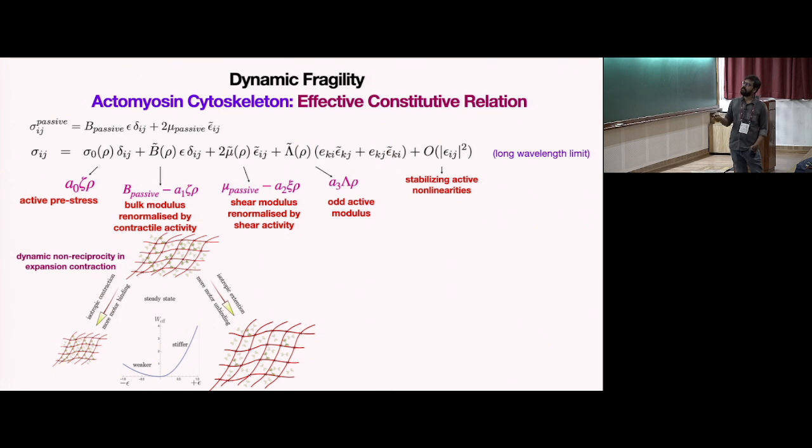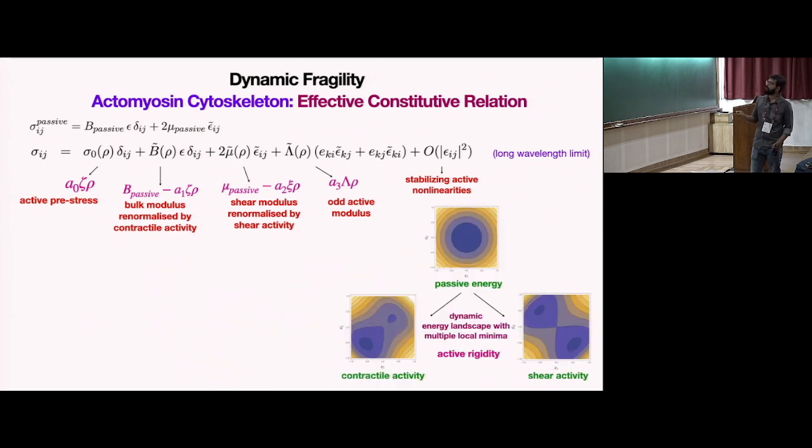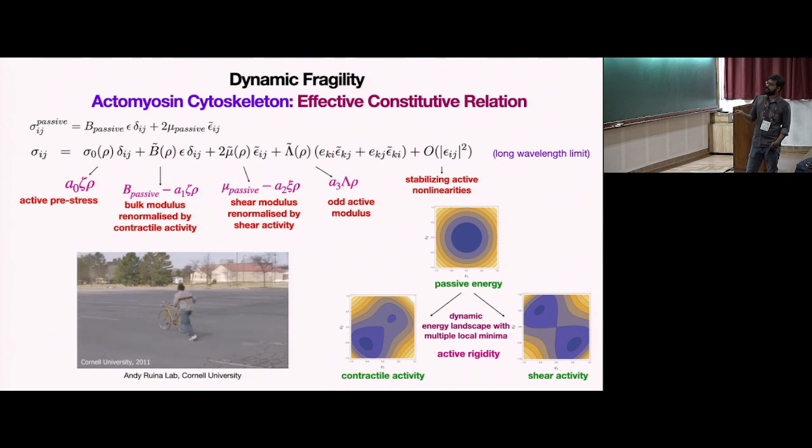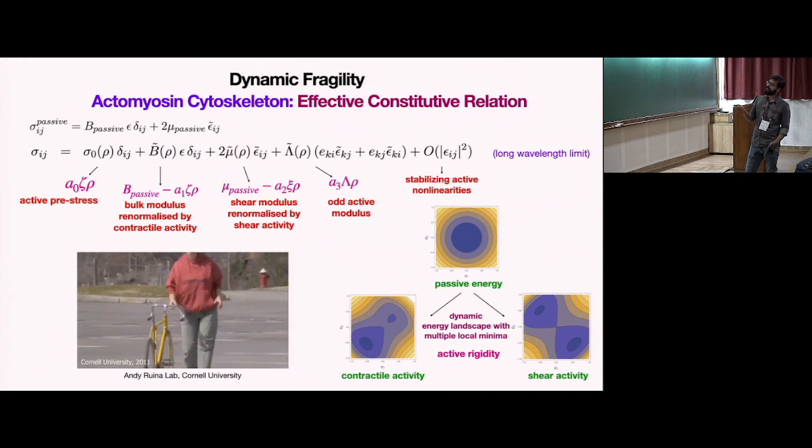One aspect of this active renormalization is the so-called dynamic non-reciprocity, where you have different behavior in extension and compression - different stiffness in extension and compression, similar to this left-right constitutive behavior for the so-called fishbone materials. The next interesting aspect is this active rigidity. When the passive energy has only one minima, it can actively generate many minimas. Thus it generates this active rigidity - it crosses the fragile regime and goes into the active rigidity regimes. This is just a simple realization of how activity can stabilize ordinary materials. This same thing is taking place here at the material level.